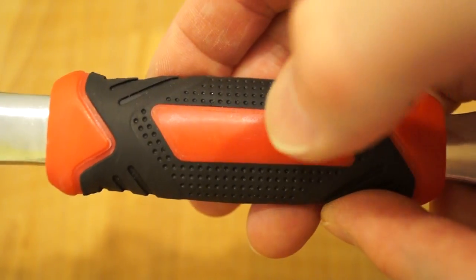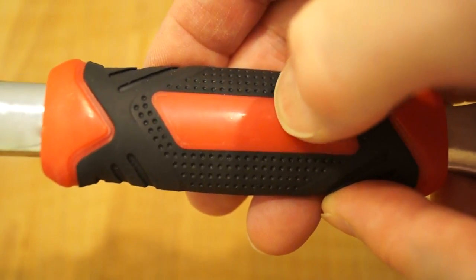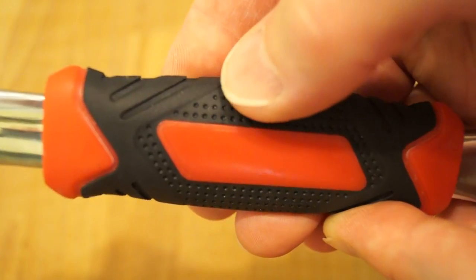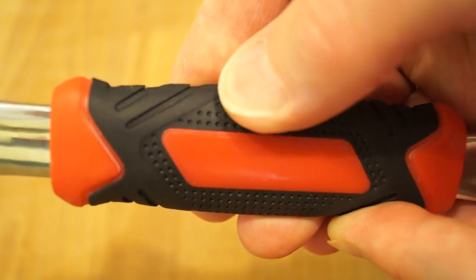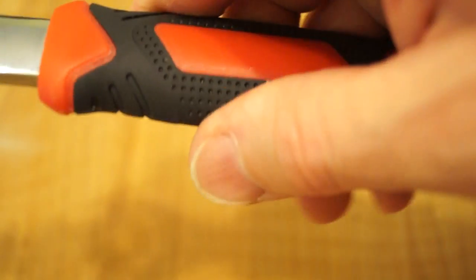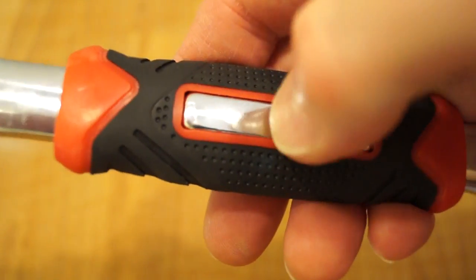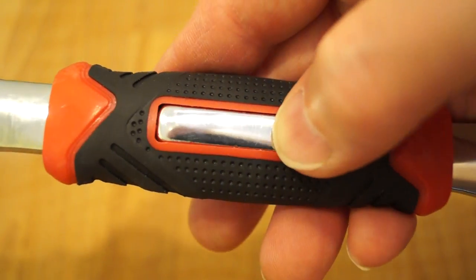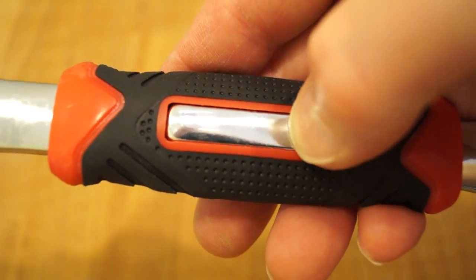Okay so the handle on this thing is a plastic with a very nice rubber overmold here. It's quite comfortable to hold. We've got a little bit of the wrench itself poking through on this side and I guess that's where you could put a manufacturer's name I guess.